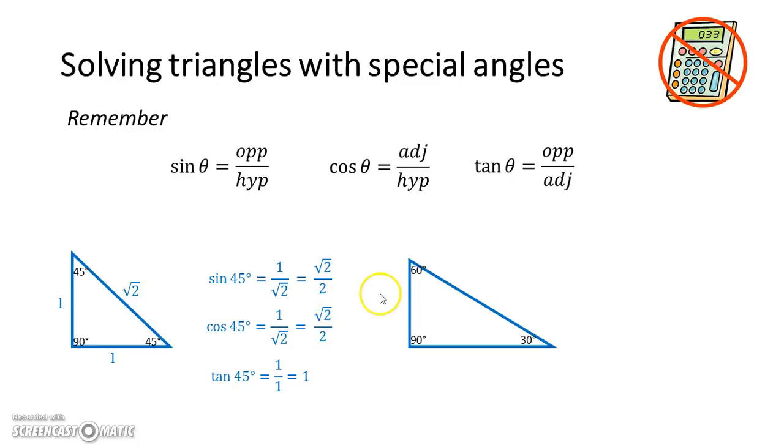Next up, 60 degrees and 30 degrees. Let's look at the 30. This triangle is like half of an equilateral triangle, if you can visualize that.